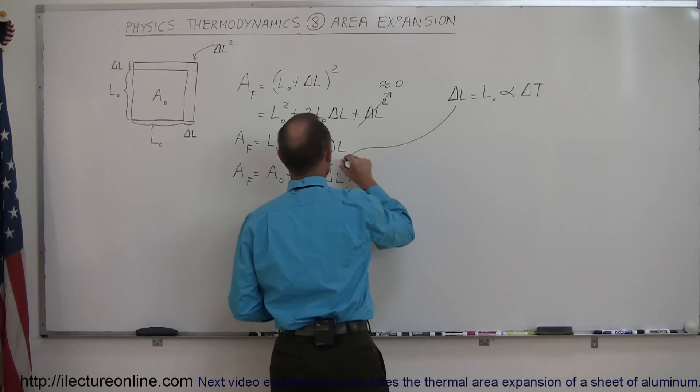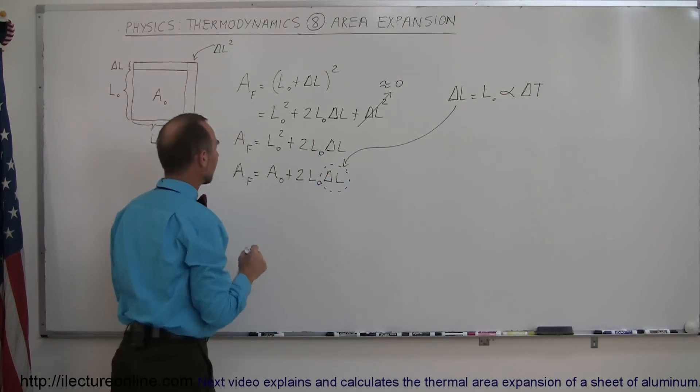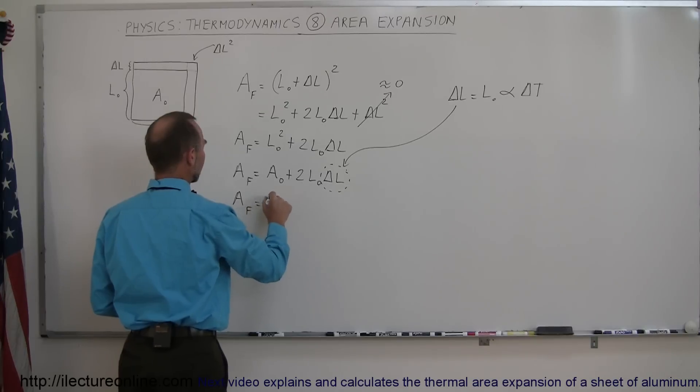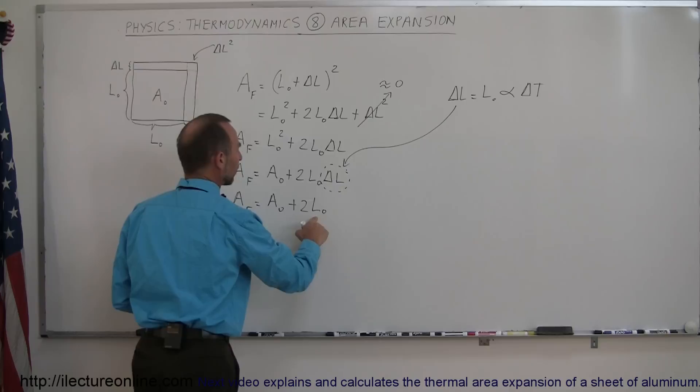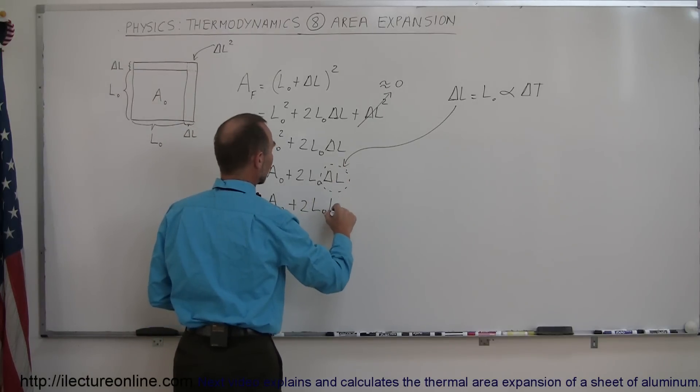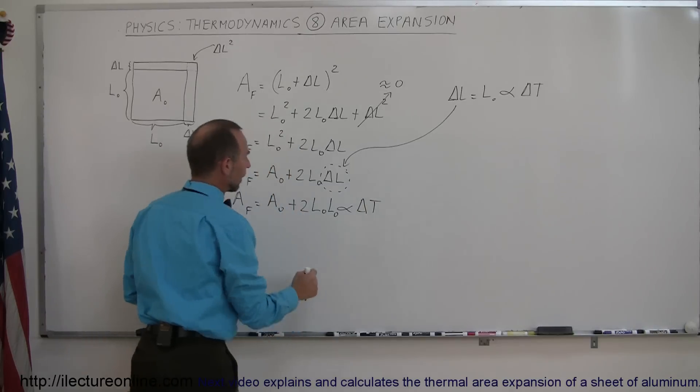If we now go ahead and take this and replace delta L by that, we now get A final is equal to the original area plus two times the original length times the original length times alpha times delta T. Now, here we have L sub nought squared,